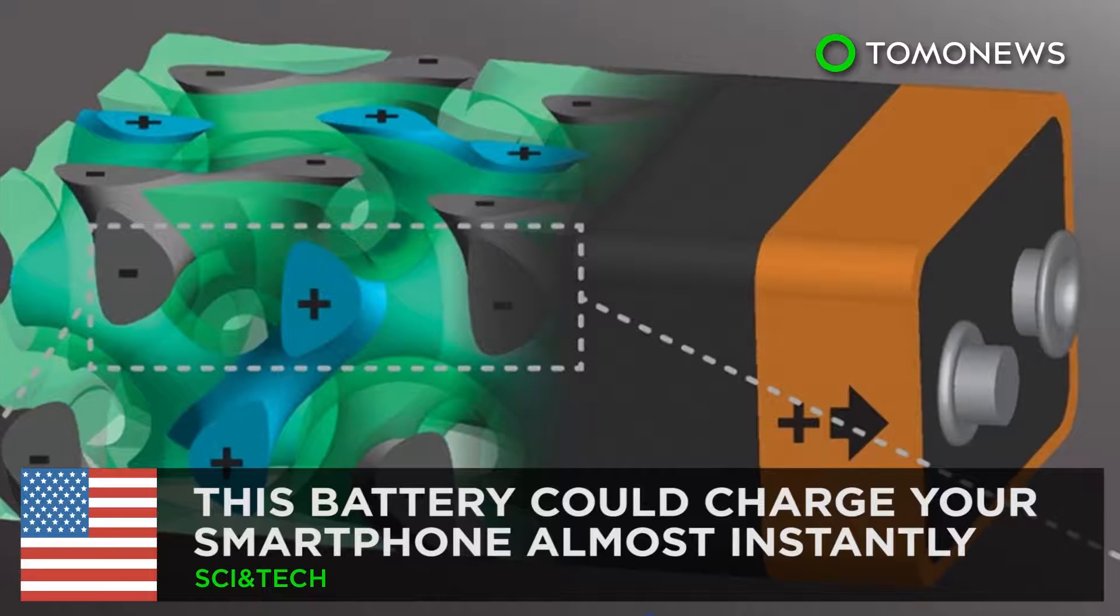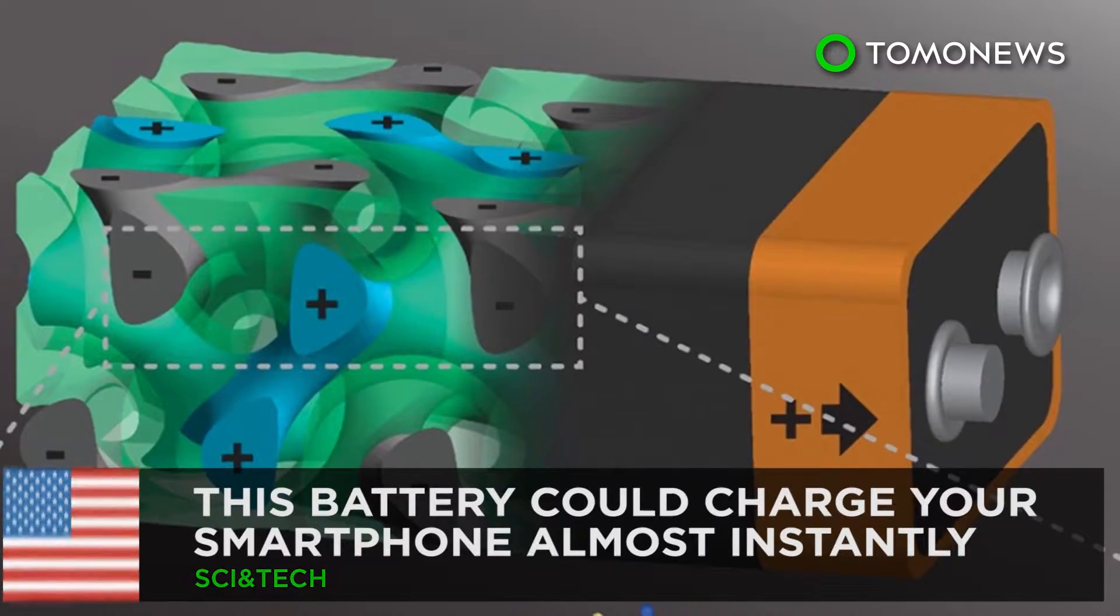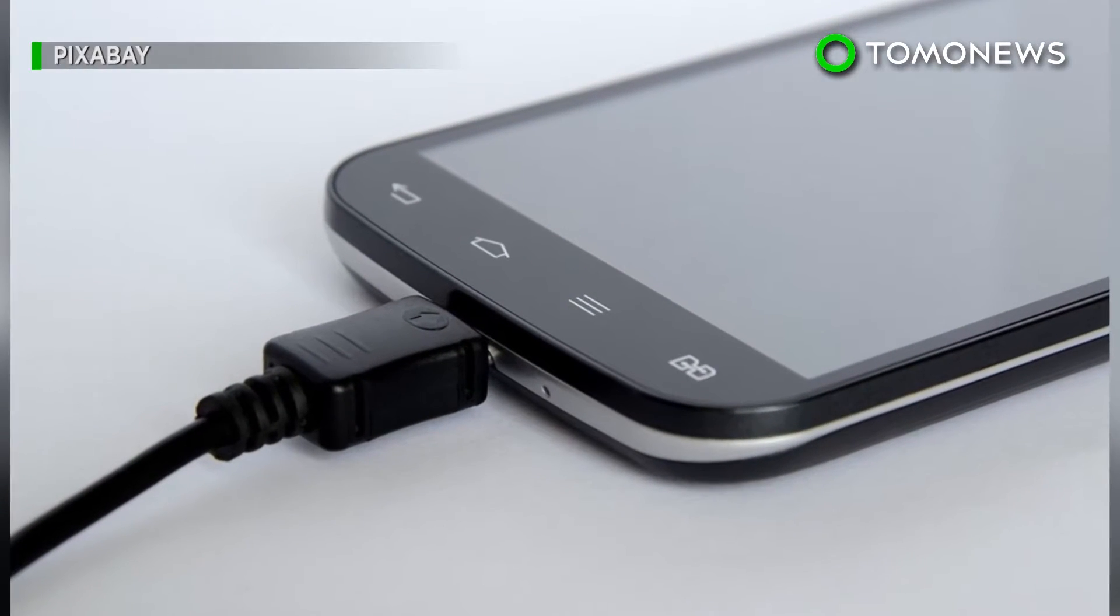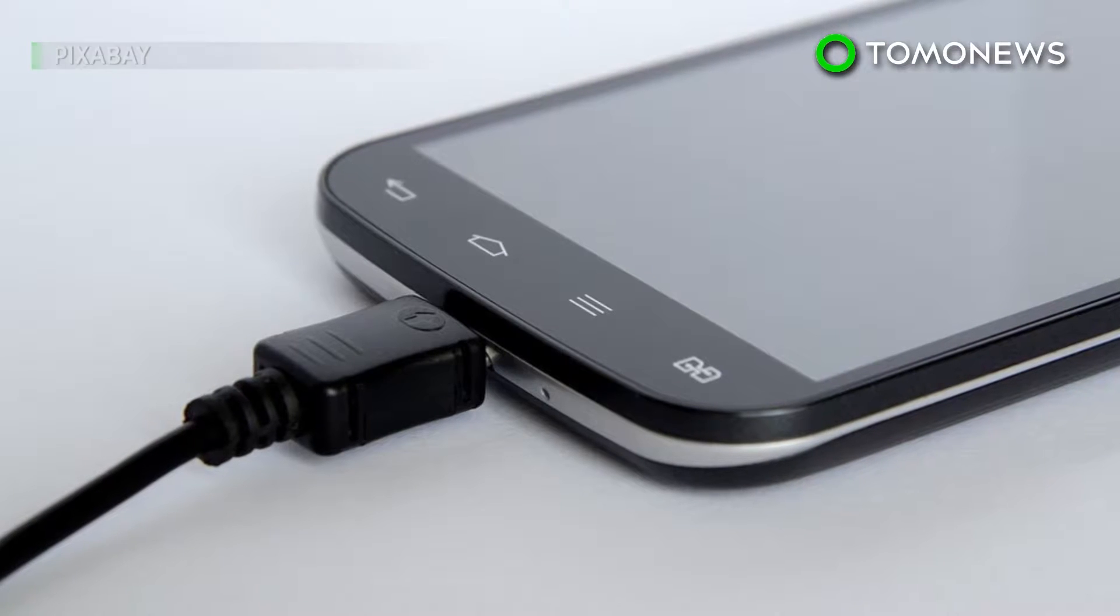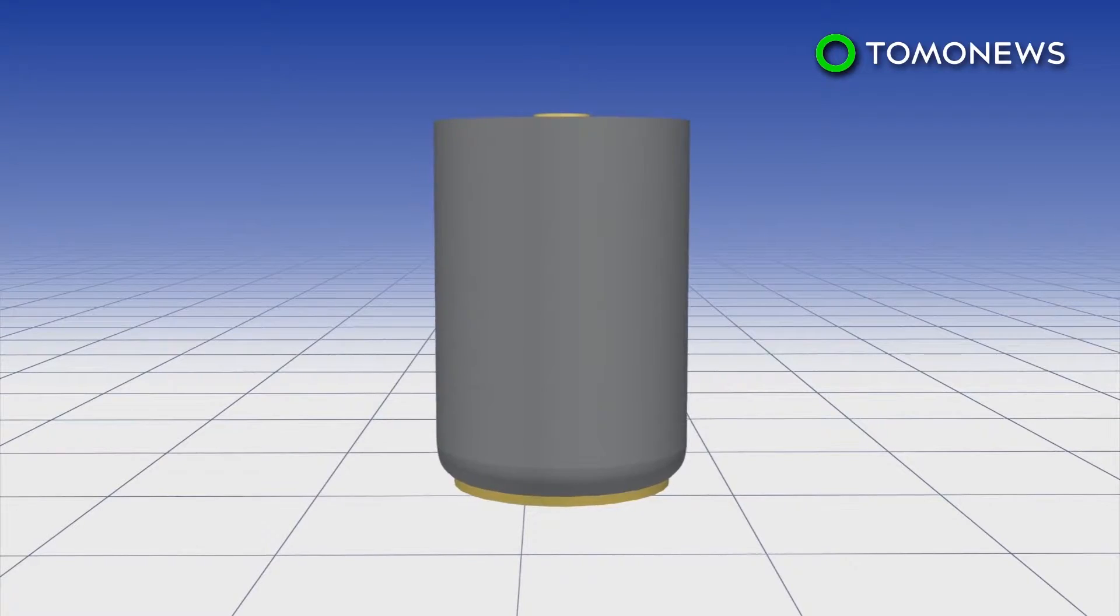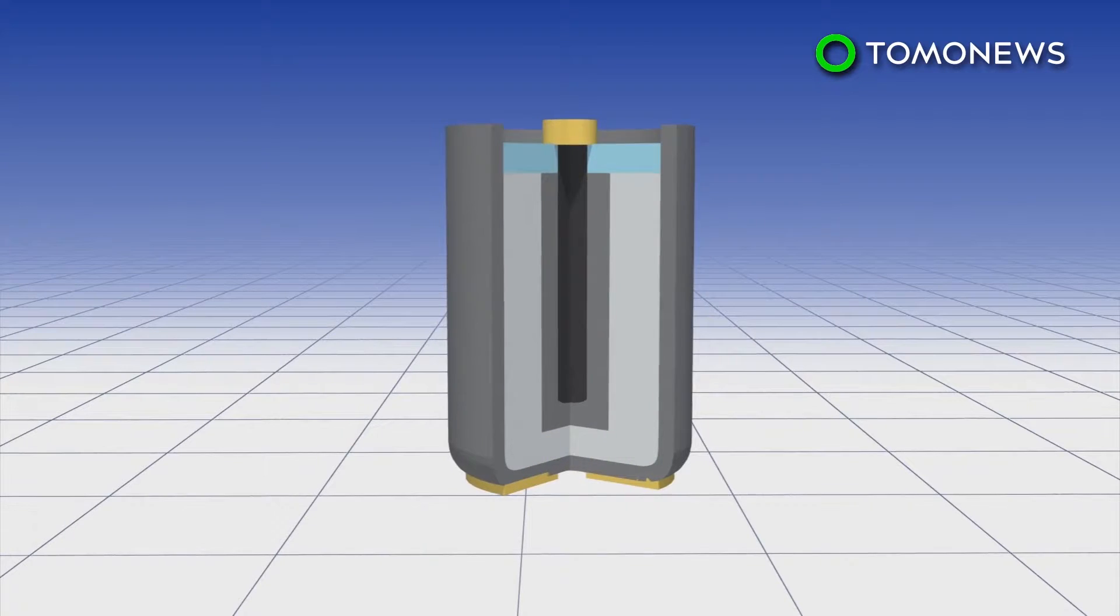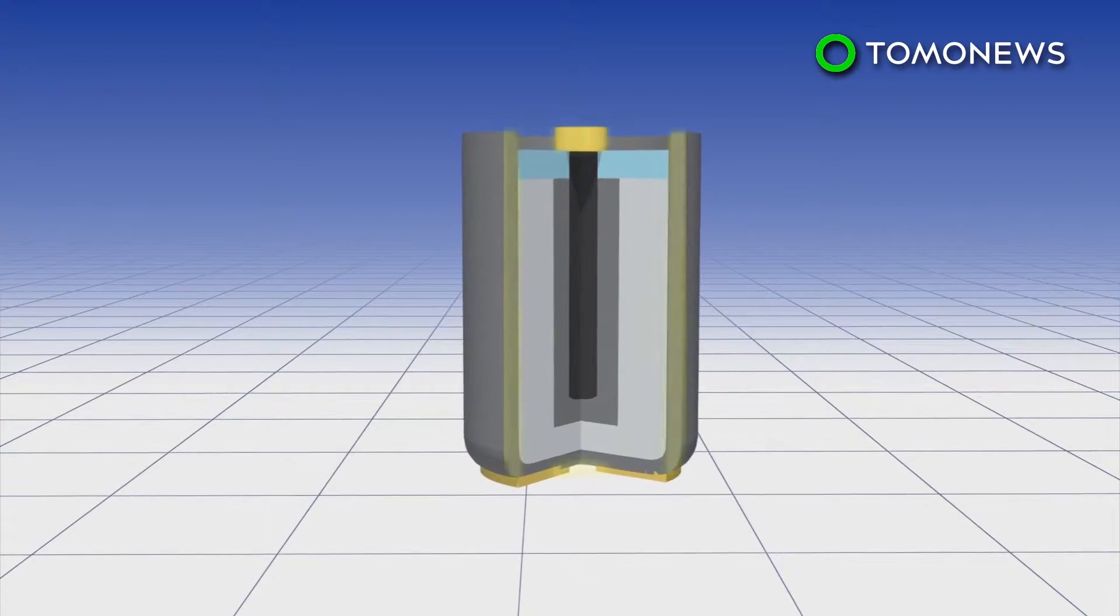This battery could charge your smartphone instantly. It takes a couple of hours to charge most smartphones, but new research from Cornell University could change all that. Typical battery design usually consists of a structure with cathode and anode on the ends, and electrolyte in between.